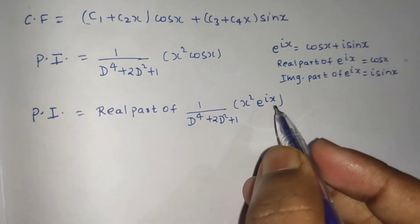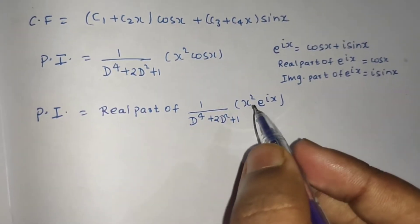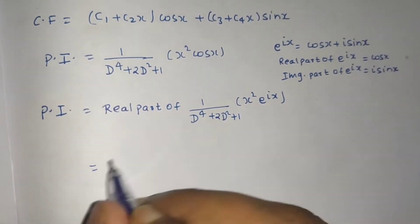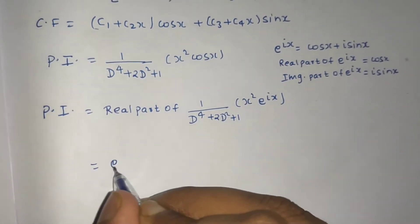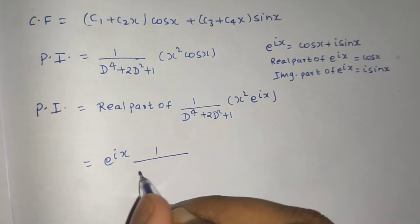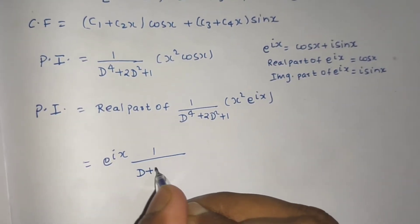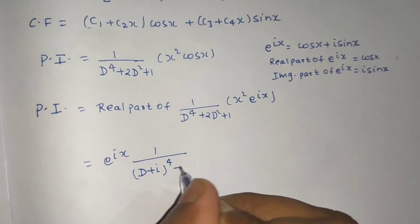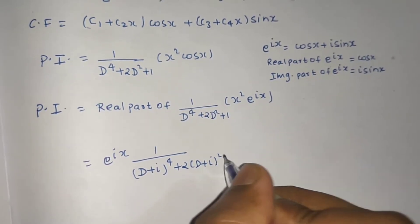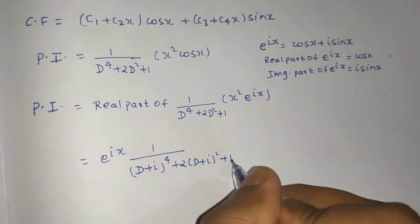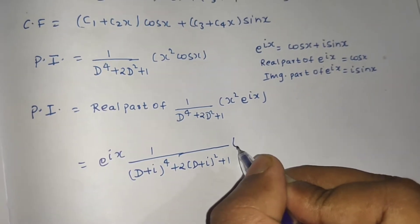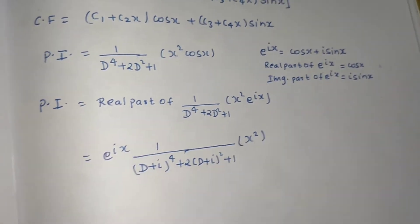Now we can solve this using the rule for e^(ax)·v: bring e^(ix) out and replace D by (D + i). So the operator becomes (D + i)⁴ + 2(D + i)² + 1, and we are left with x² inside.